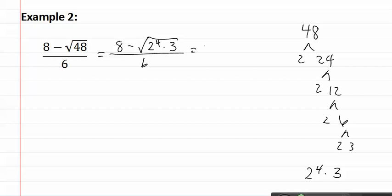Now, when I pull out the twos, I get eight minus two squared square root three over six. This gives us eight minus four square root three over six.